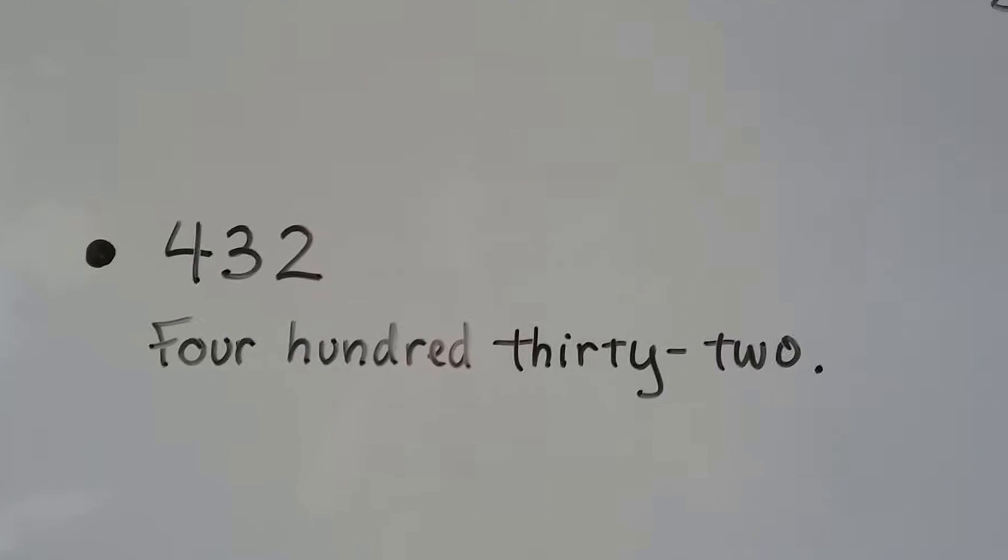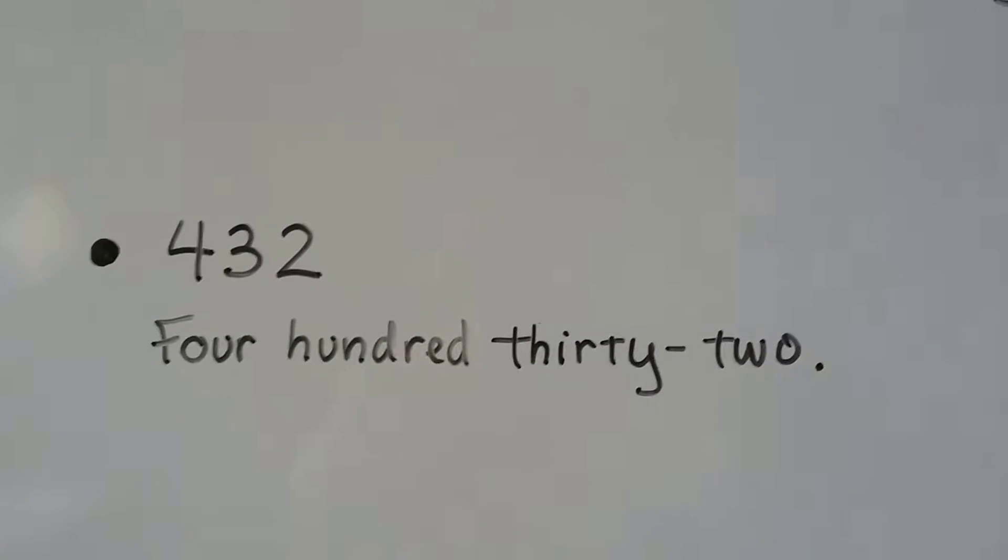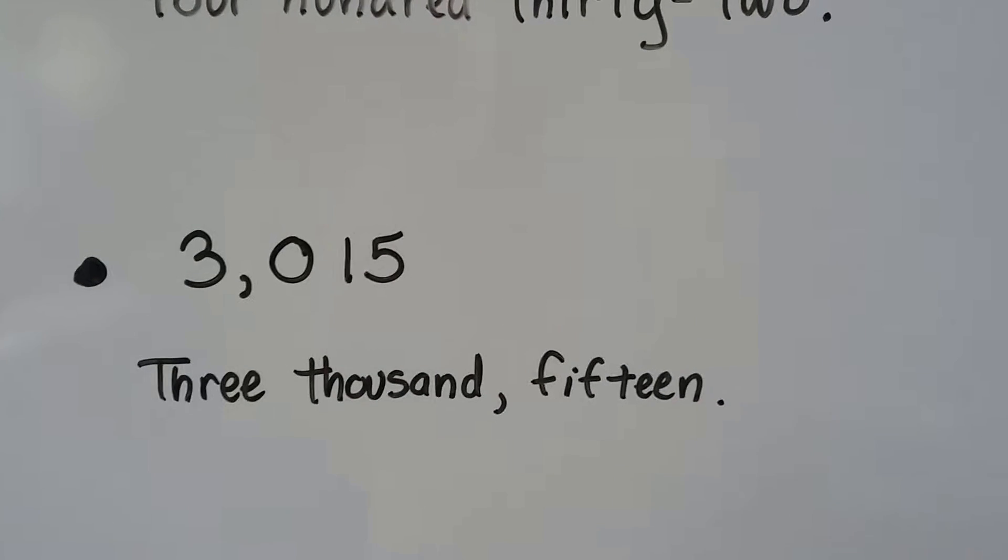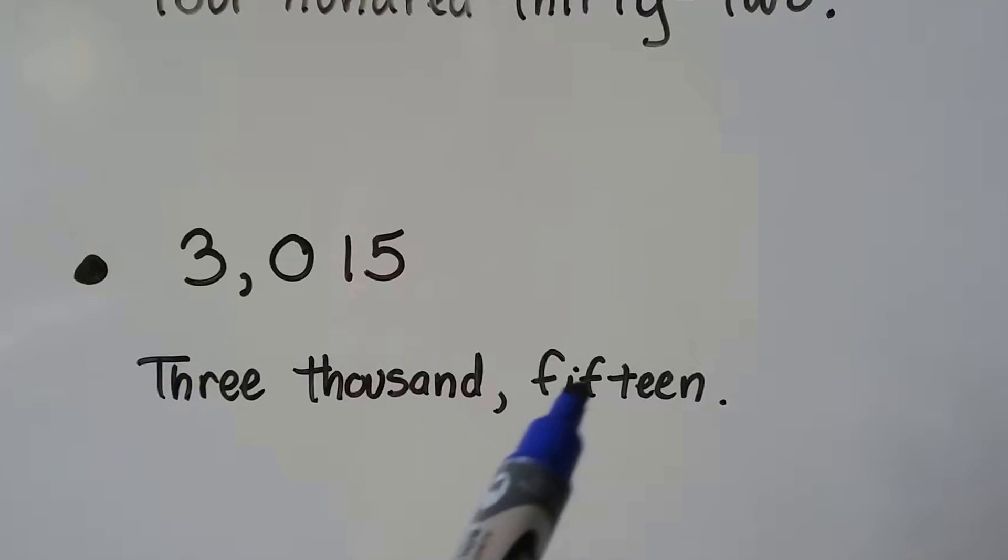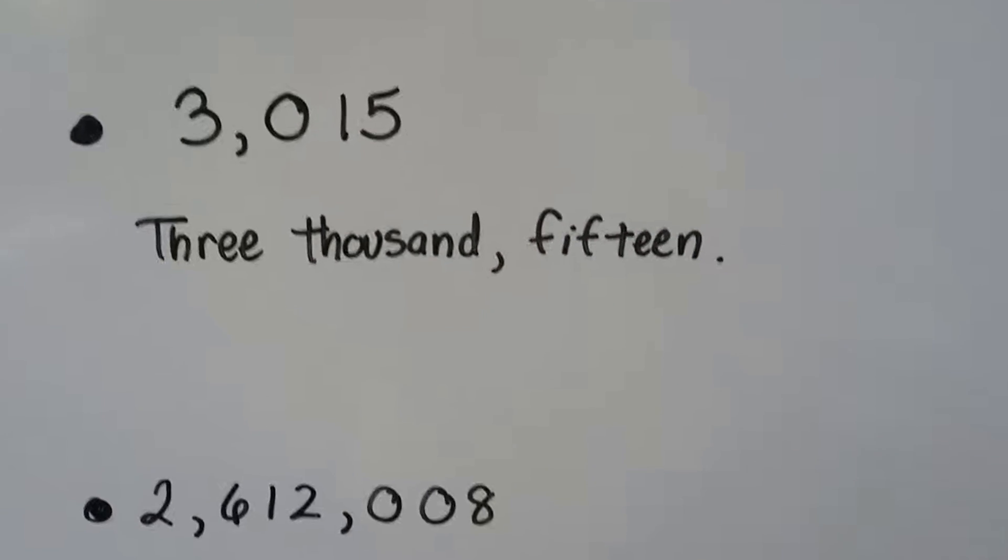This is four hundred thirty-two with a hyphen between the thirty and the two. This is three thousand fifteen. There's no hundreds, so we just go straight to the fifteen. And I'm not saying and.